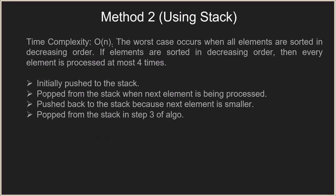The time complexity is O(n). The worst case occurs when all elements are sorted in decreasing order. In this case, every element is processed at most four times: once when pushed onto the stack, once when popped while processing the next element, once when pushed back because the next element is smaller, and once in step three when finally popped. So at most each element is processed four times — that is 4n for the whole array — giving us a time complexity of O(n).